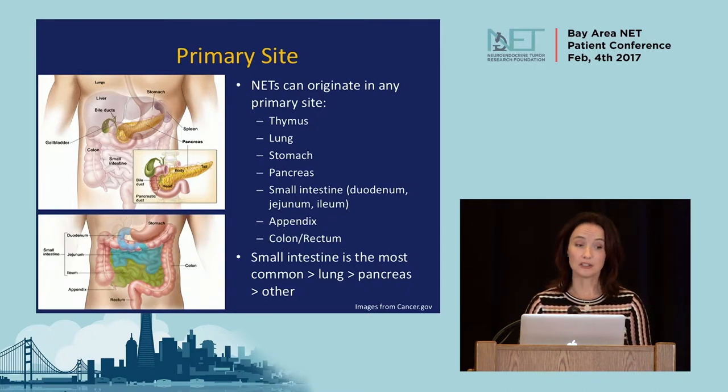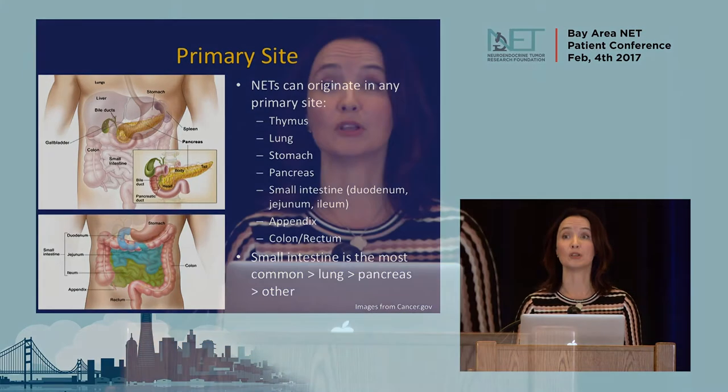The small intestine is probably the most common primary site, followed by lung and pancreas and then others. The site matters because we've learned from epidemiology data — like the SEER data — that the prognosis is extremely different even for the same grade and stage of neuroendocrine tumor, depending on where the tumor comes from.